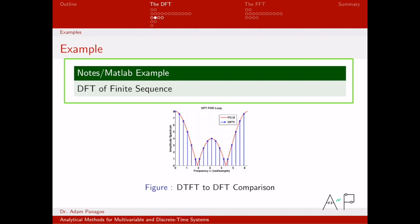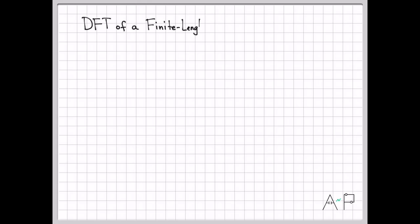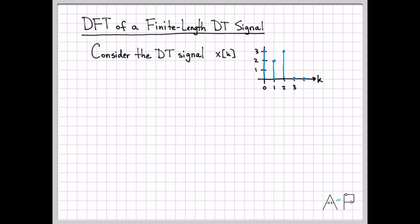DFT of a finite length sequence. So the signal we're going to be working with here is the discrete time signal x of k, and x of k is equal to this signal right here. It only has three non-zero values. At time one, it's equal to two. At time two, it's equal to three.